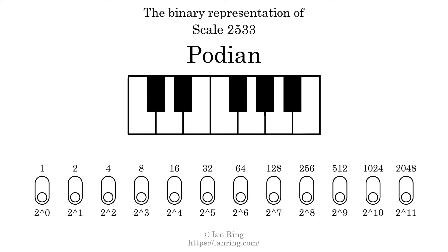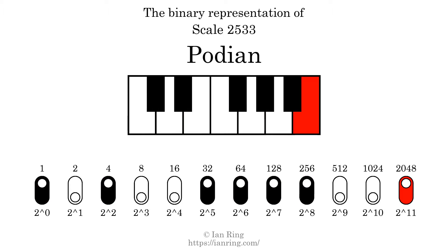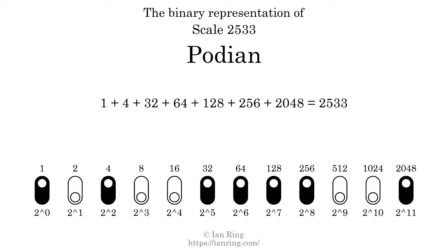The binary representation of this scale is determined by mapping tones of the scale to binary digits. Each binary digit represents a power of 2. To get the scale number, we add the powers of 2 together. The powers of 2 that are present in the scale, all added together, equals 2533. That is why the scale number, in decimal, is 2533.